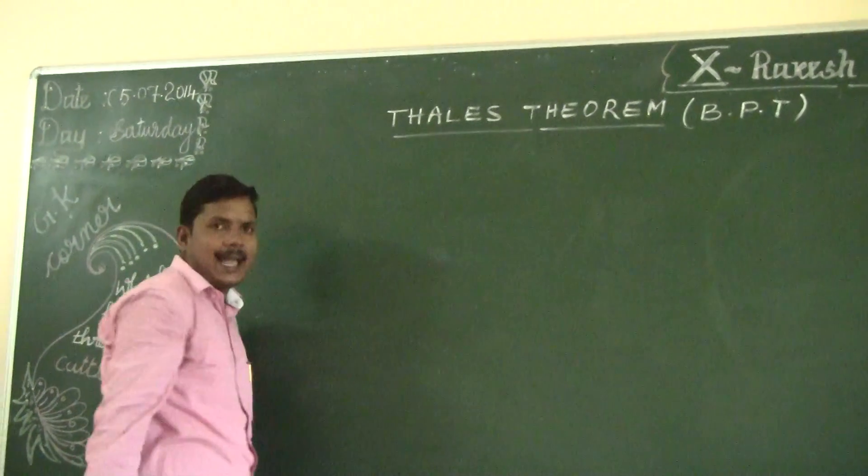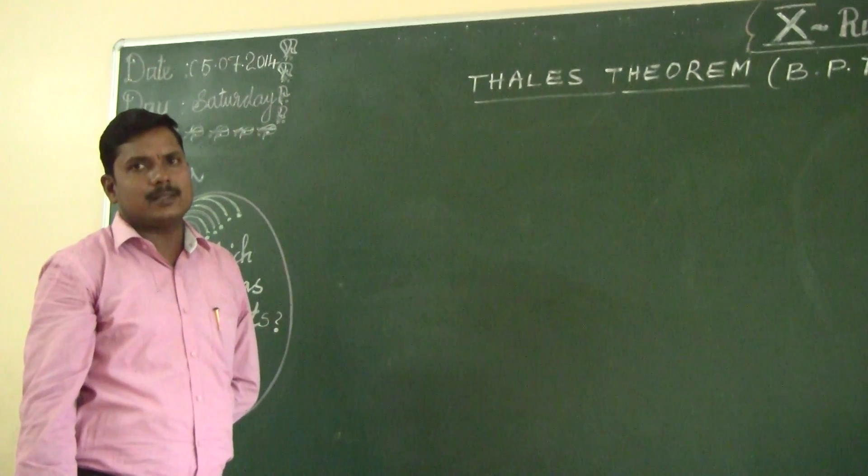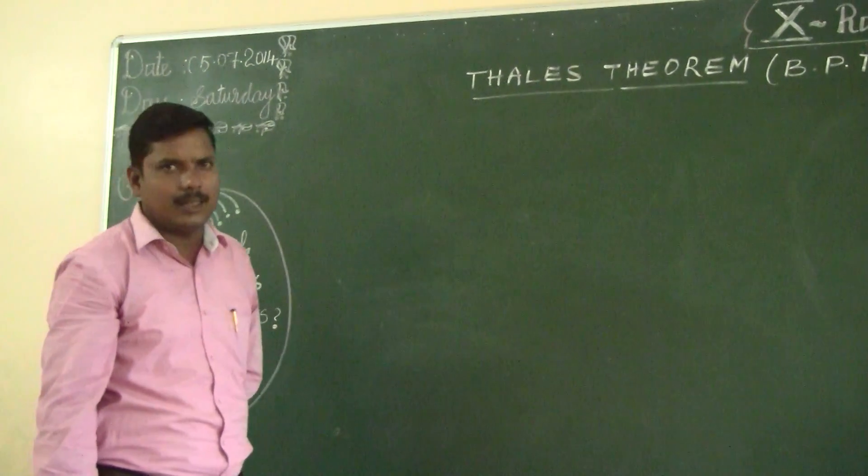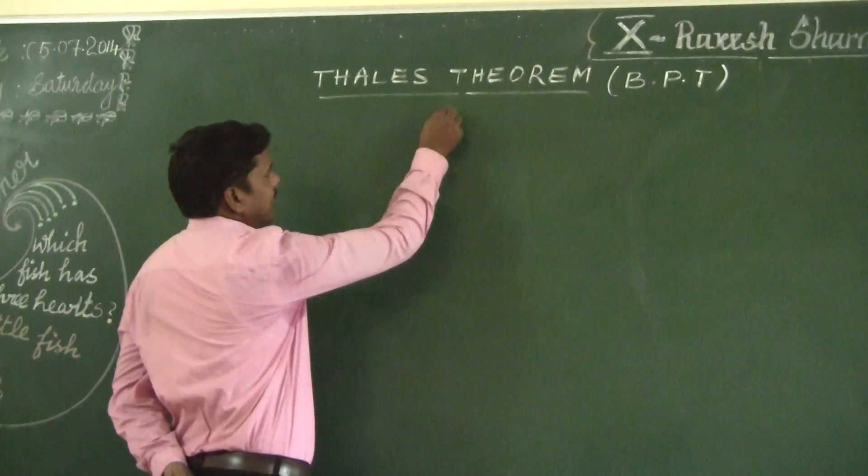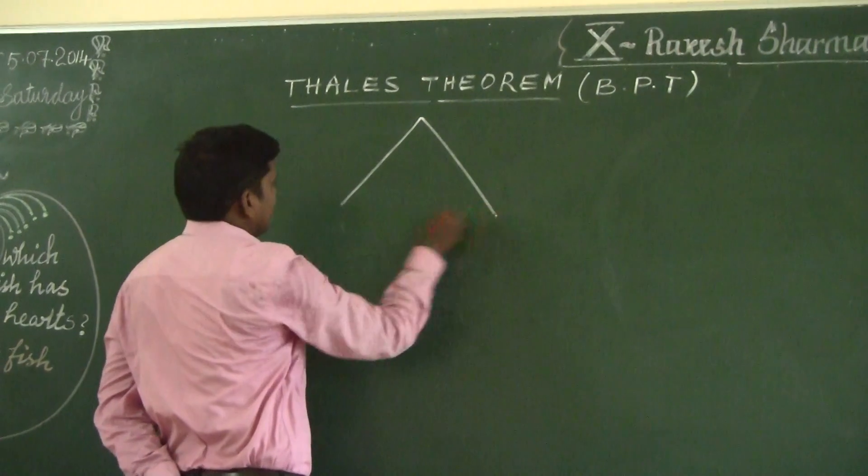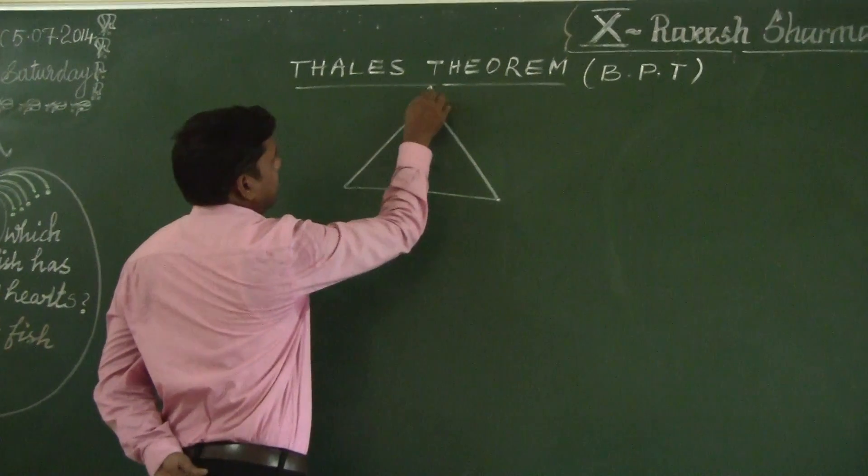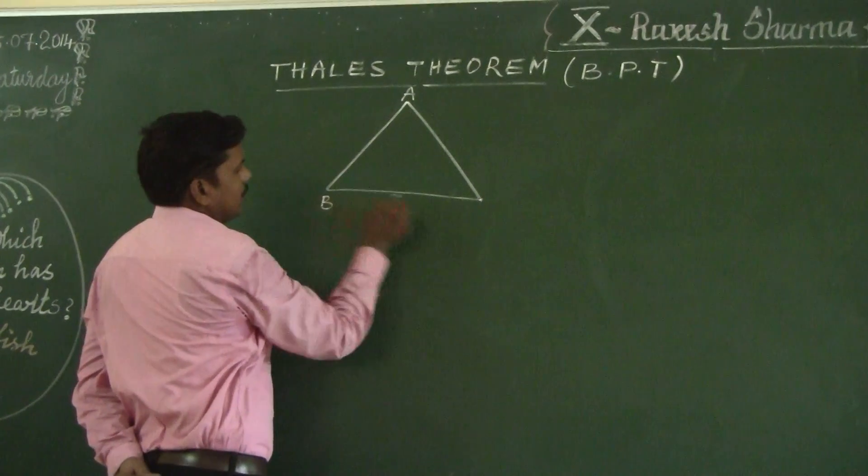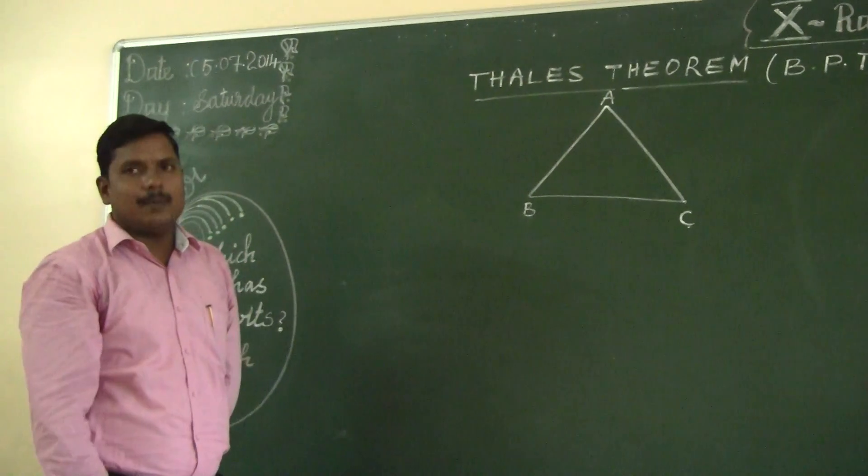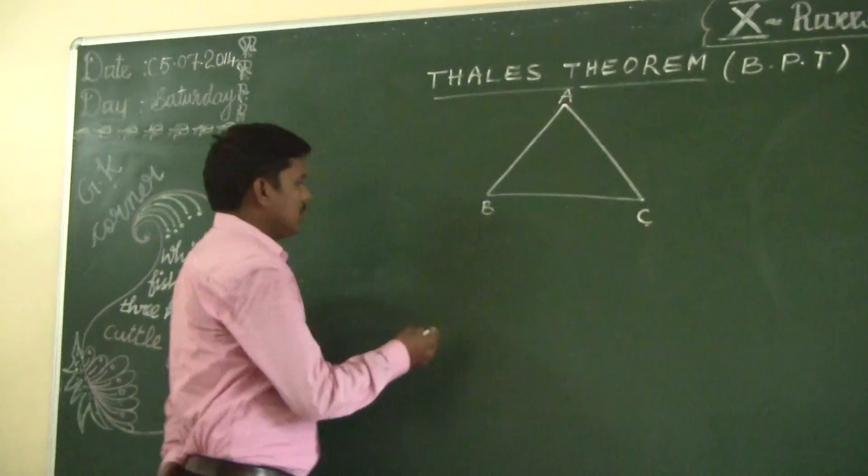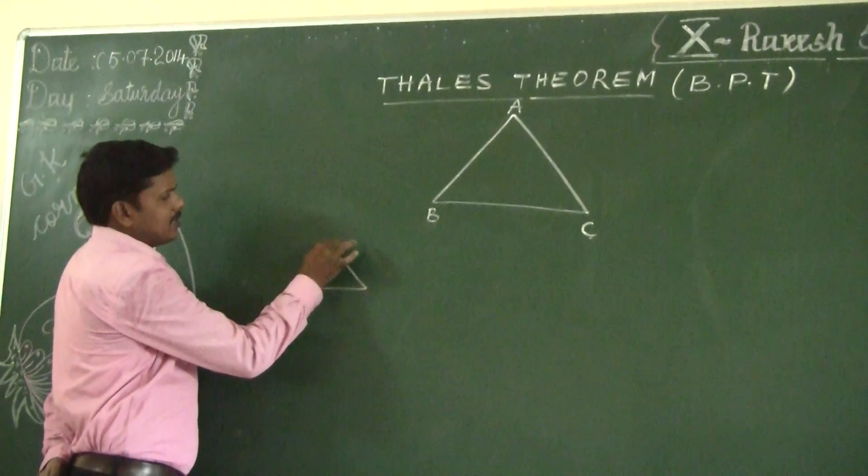Suppose if you draw a line parallel to one side of a triangle, it divides the remaining two sides in the same ratio. So, for example, take a triangle ABC.